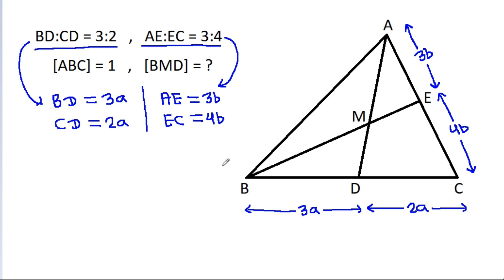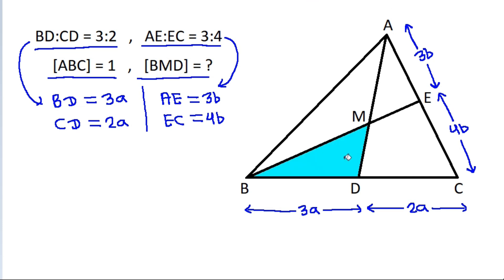And we have area of ABC is equal to 1. Then we have to find area of BMD — this area.